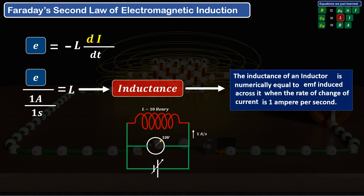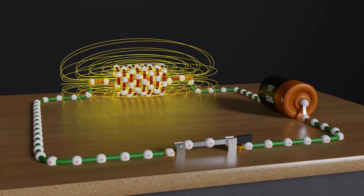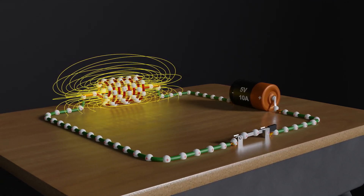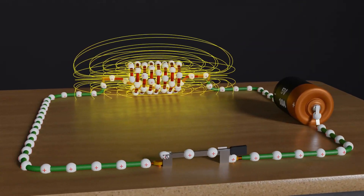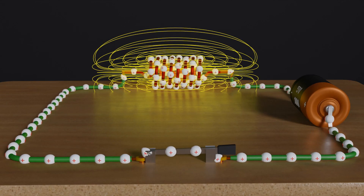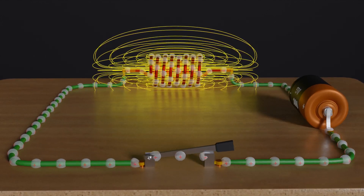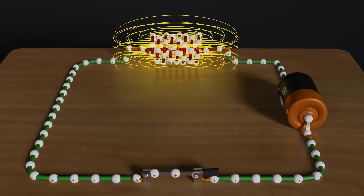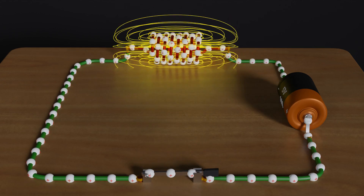In the last video, we saw an example of increasing current. Now let's switch off the circuit and understand what happens if we interrupt a constant current of 10 amperes. We have a circuit with a battery of 5 volts flowing a constant current of 10 amperes, where the inductor has generated the maximum possible magnetic field. When we switch it off, the current instantly tries to become zero from 10 amperes. As current decreases, the magnetic flux linking to the cross-section of the coil will also start decreasing. Therefore, according to Faraday's law of electromagnetic induction, EMF will be induced in the inductor.